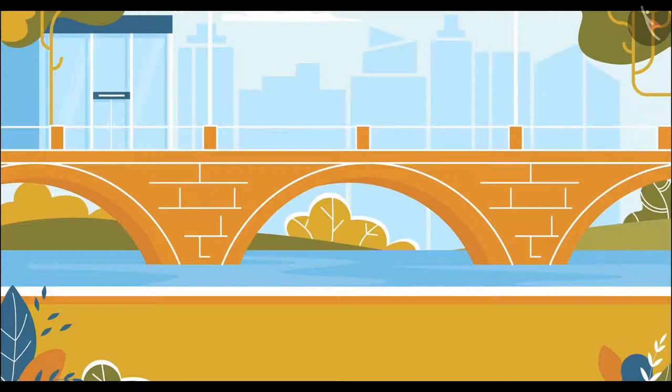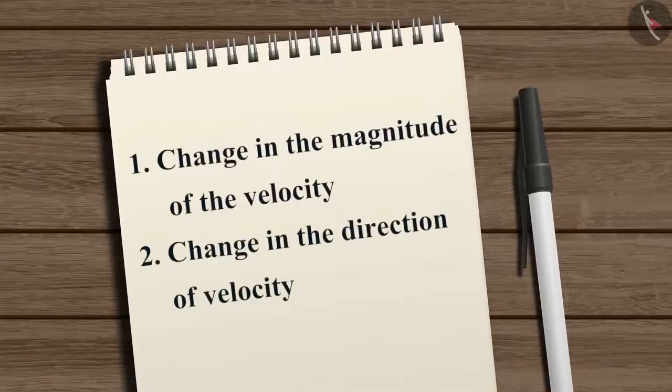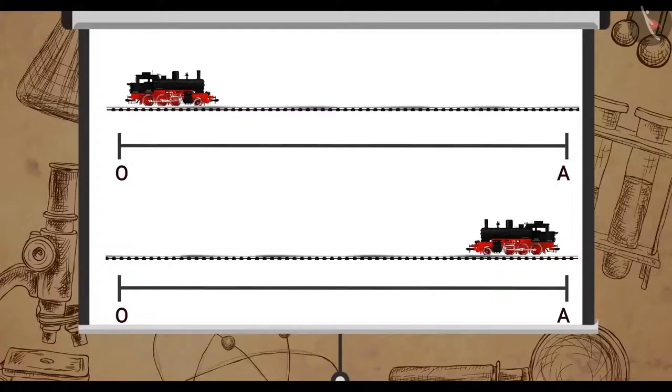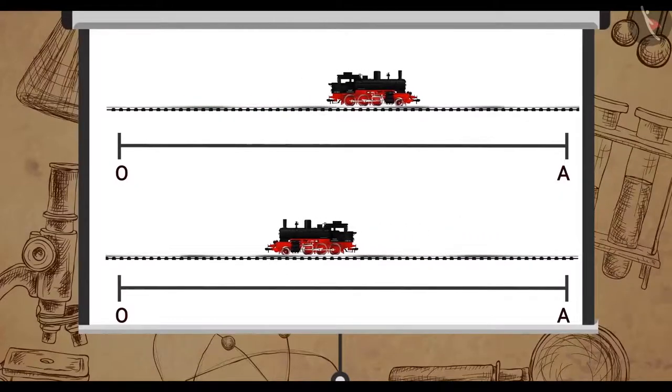There can be two reasons for the change in the velocity of an object. One is the change in the magnitude of the velocity, and the other is the change in the direction of velocity. Can you give an example when an object is changing only its direction of motion but not its magnitude of velocity?